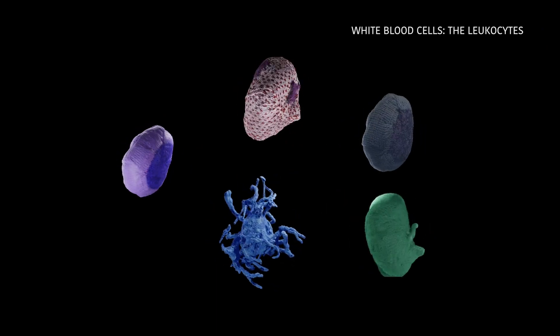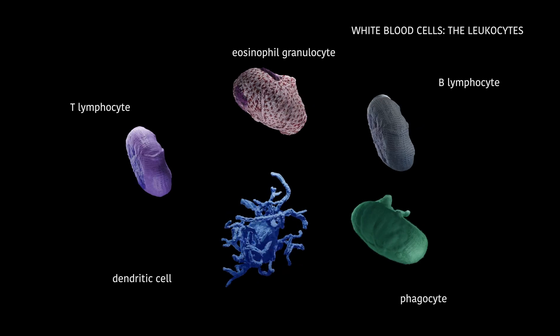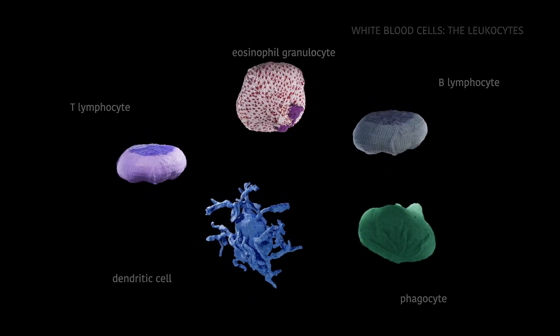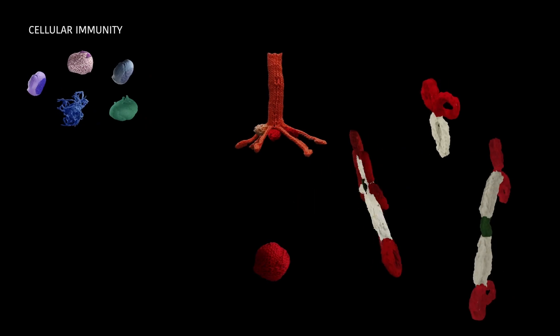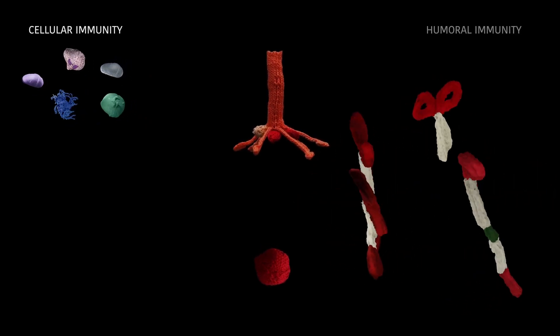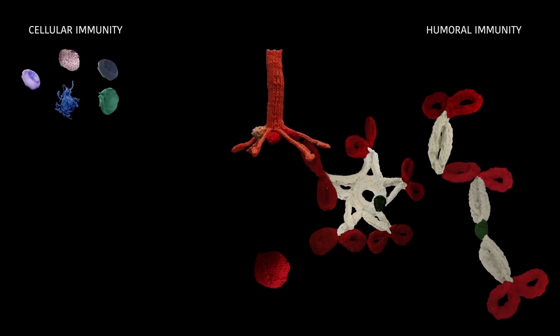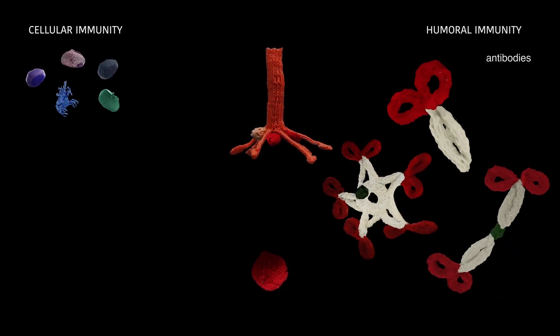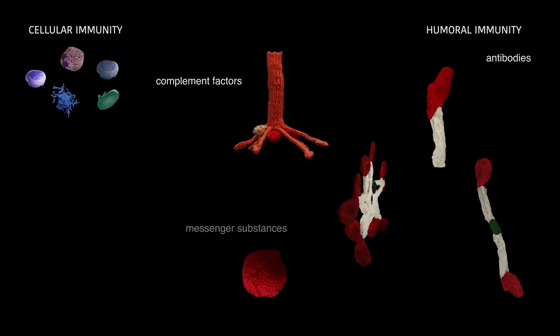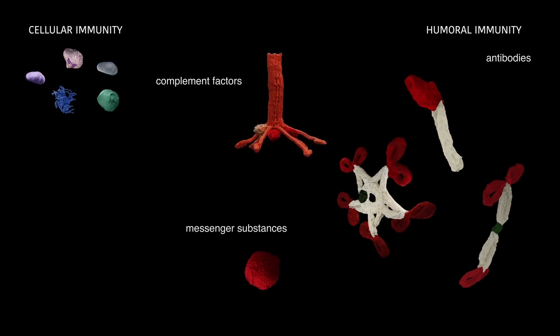The main players are the various white blood cells, the leukocytes. White blood cells form what is known as cellular-mediated immunity, and giant molecules floating in the blood form humoral immunity. These include antibodies, complement factors, and a multitude of small messenger substances that swim in the blood.